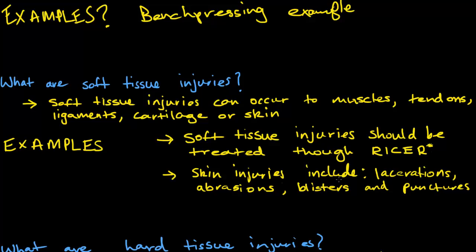For soft tissue injury examples, there's quite a lot. One is tendonitis — the inflammation of a tendon as a result of poor technique. For example, if you were squatting incorrectly without the correct technique, you might get tendonitis, which affects the tendons. You could also get a ligament sprain, which is the result of a joint moving beyond its normal range of motion — for example, falling awkwardly in a rugby league tackle could cause a ligament sprain.